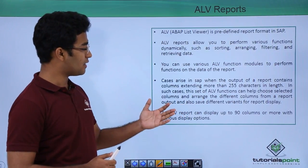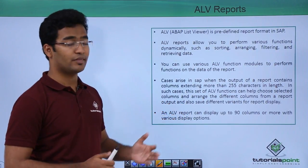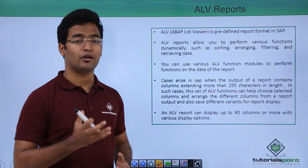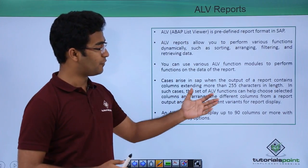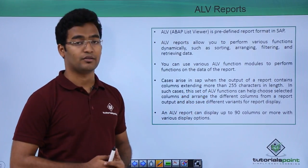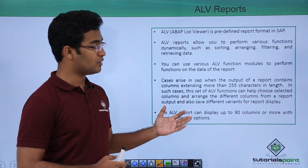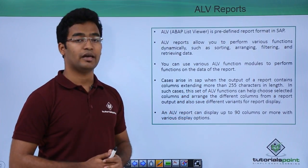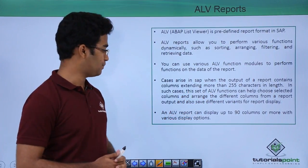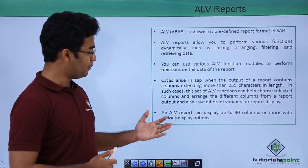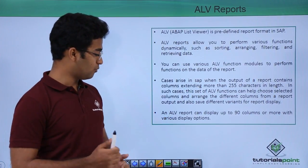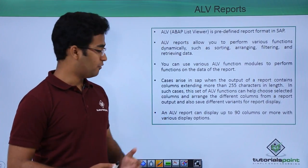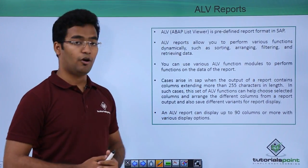Sometimes cases arise in SAP when the output of a particular column exceeds more than 255 characters in length. In these cases we can use ALV functions. An ALV report can display up to 90 columns or more with various display options.